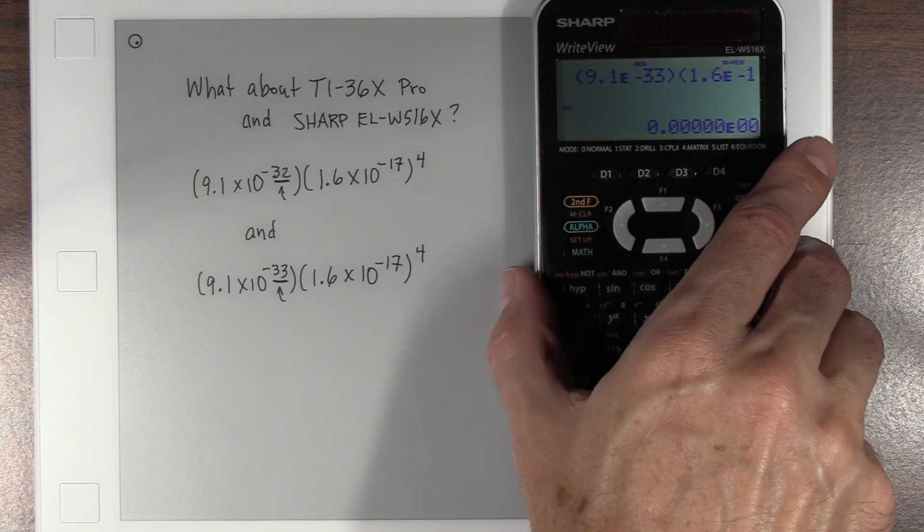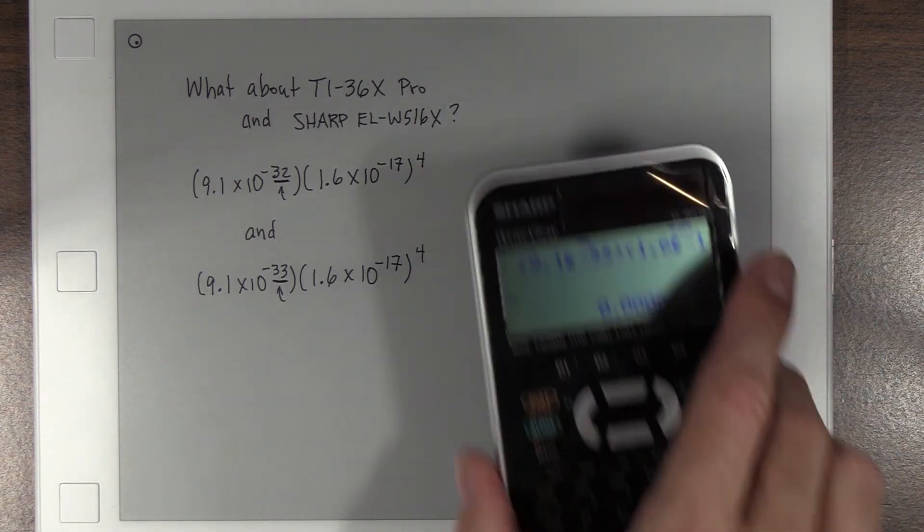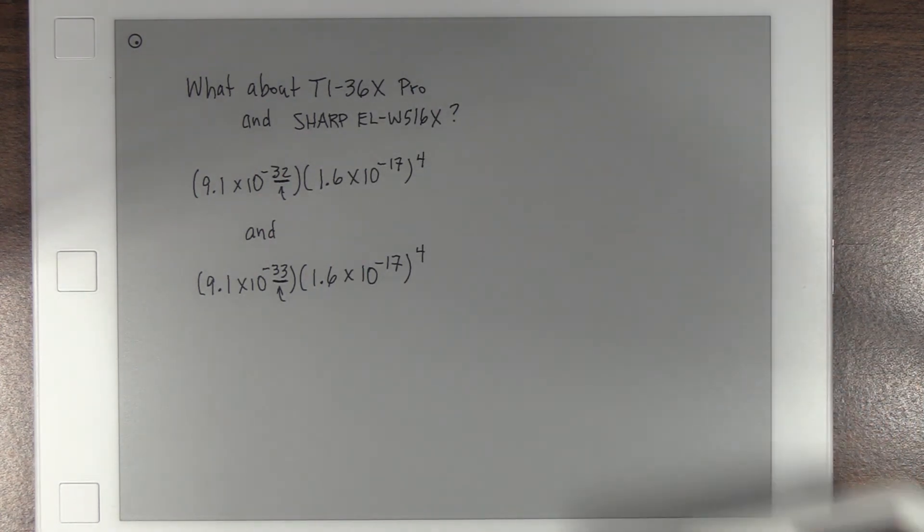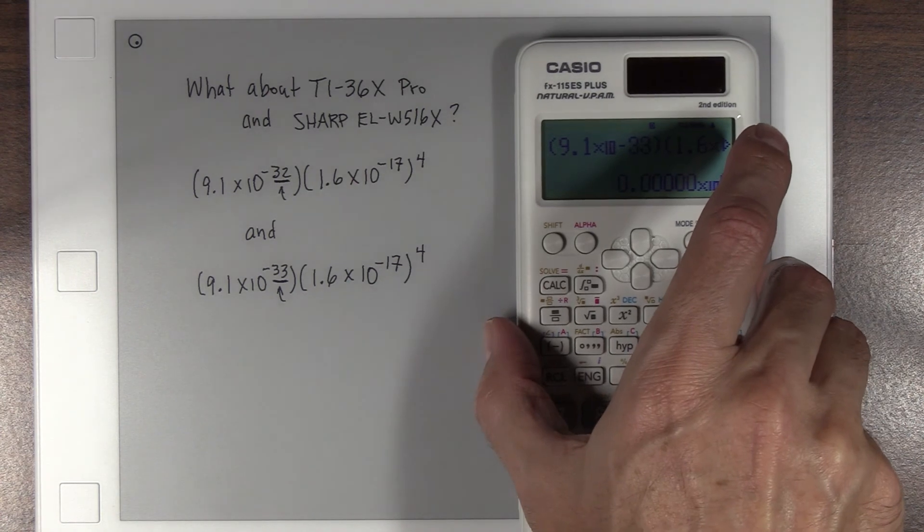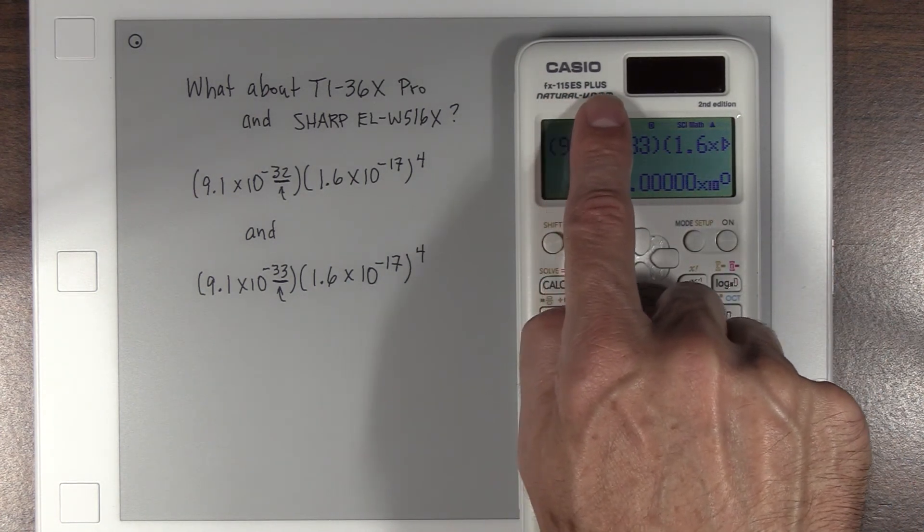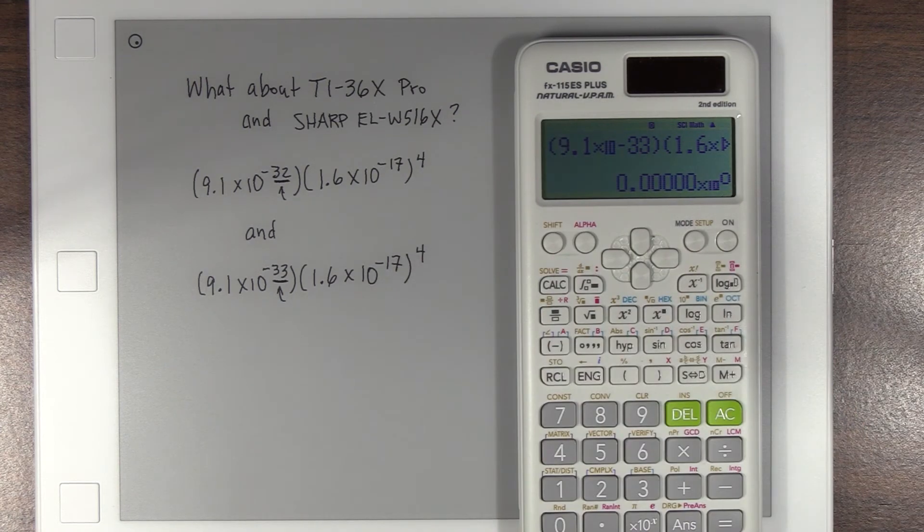So all three of those calculators, including the professional grade TI and the Sharp with lots of letters in its name, those both, you know, I'm giving the Sharp a hard time. But actually, if you want to pick on one, it's this one: Casio FX-115ES Plus, second edition. And it also has this natural VPAM. Pretty sure that's a vitamin that's good for your fingers.